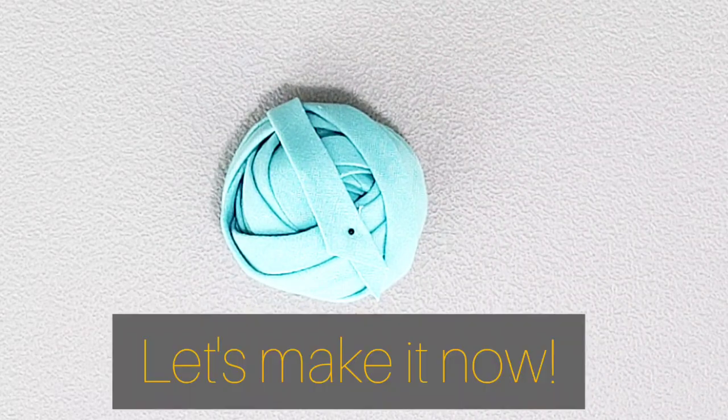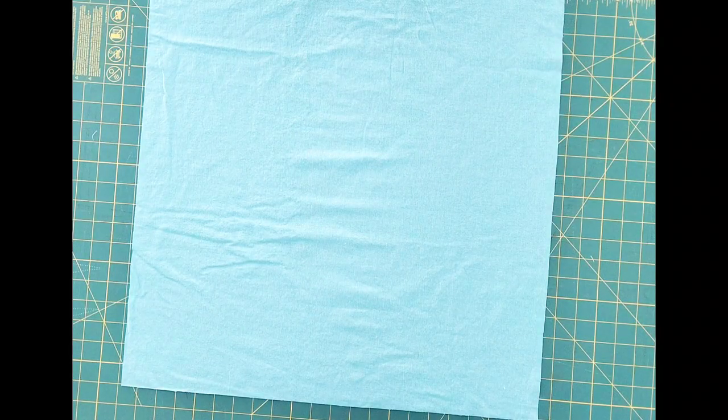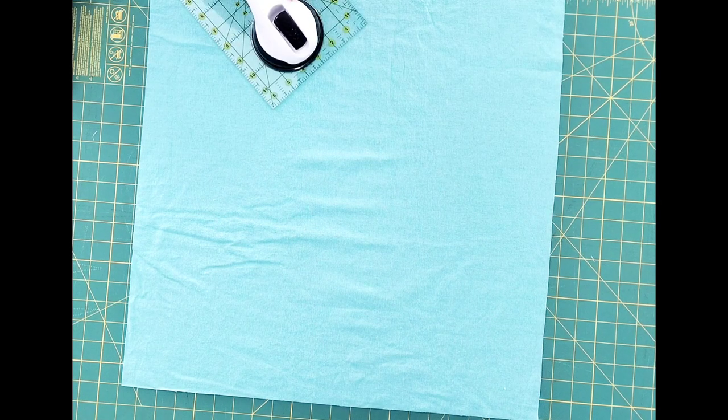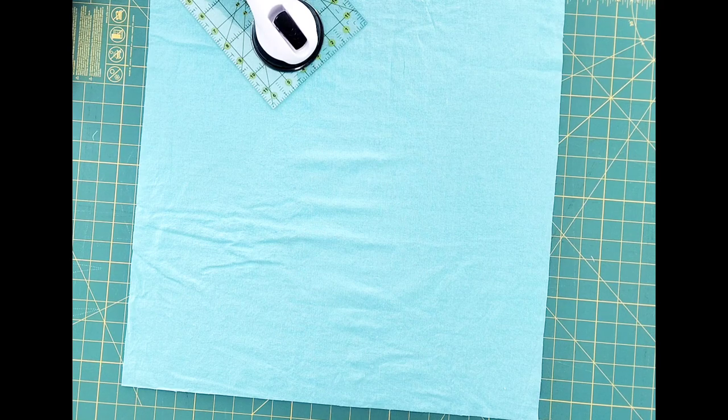I'm using half inch double fold bias tape. I've cut a 21 inch square and I'm going to use my clear gridded ruler to cut this square in half from corner to corner at a 45 degree angle.